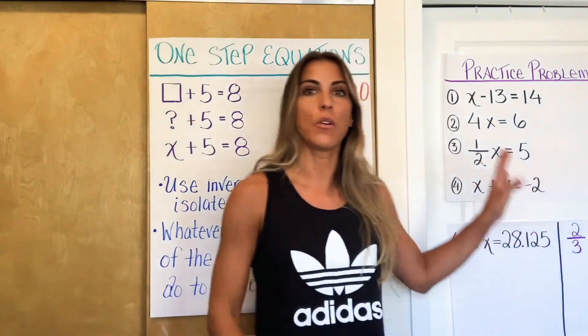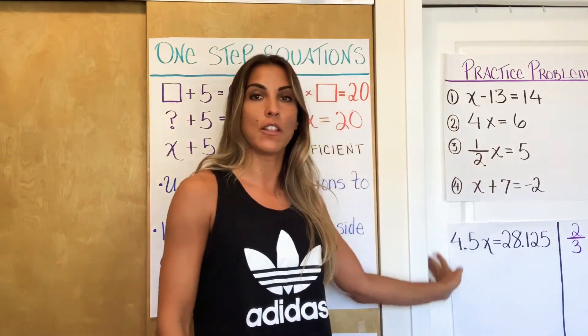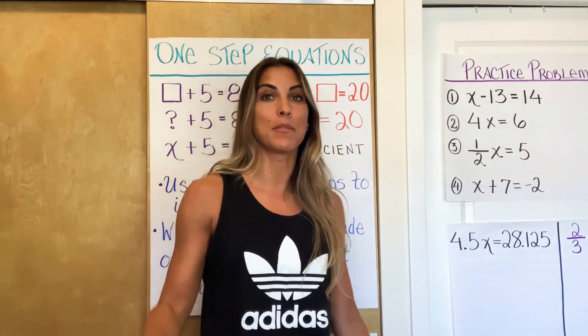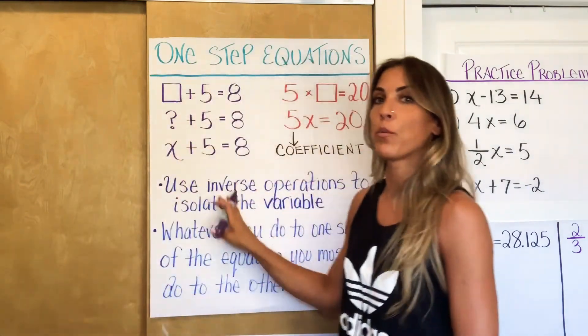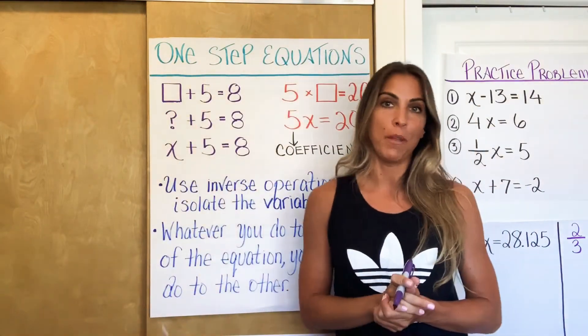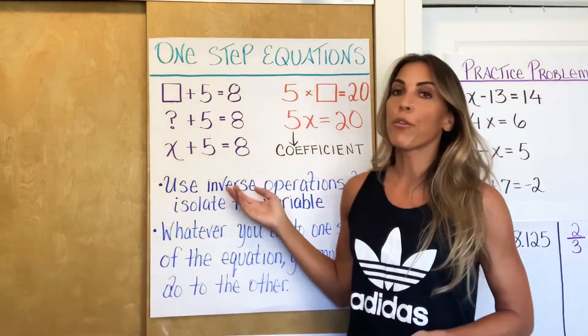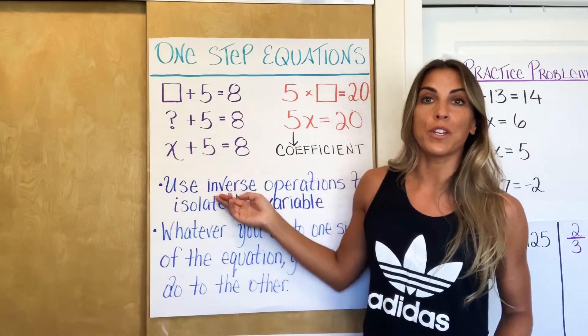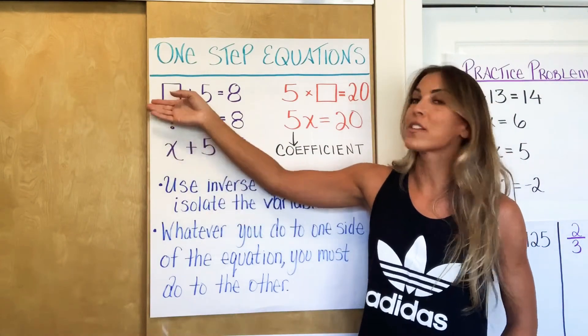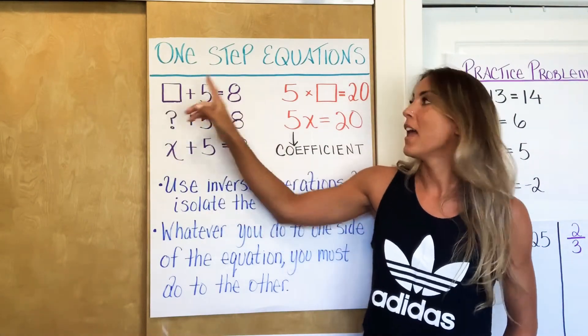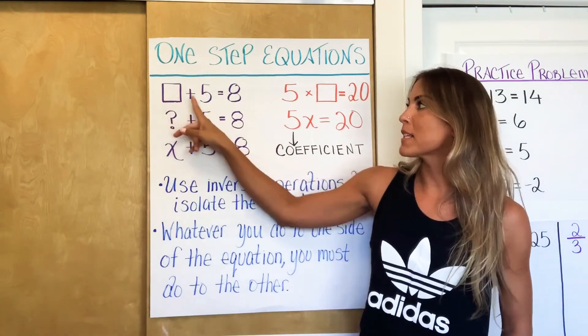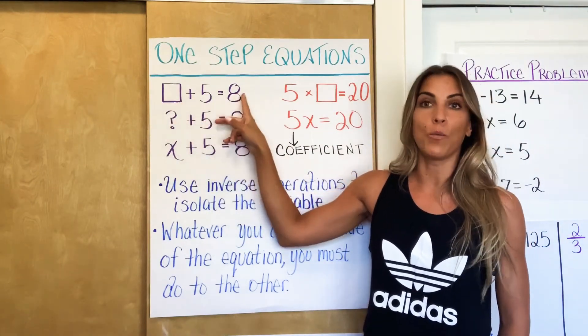We're eventually going to get into more complex equations, but I'm starting with simpler ones, so just bear with me if these look too easy. When you were first introduced to equations, they probably looked something like this: an empty box plus five equals eight.